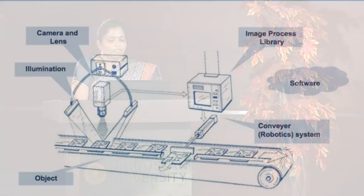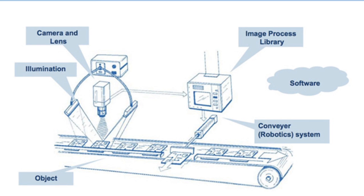This is how a machine vision system looks like. The various components are shown here. Objects are available on a conveyor in the production line. We have illumination to light up so that the digital image is acquired in good quality. We have a camera and lens which acts as a sensor to acquire images. We have an image processing library which does the entire image processing from which the decision can be acquired, and software to help with this image processing. We also have a conveyor or robotic system to eject objects in case of rejection or sorting.